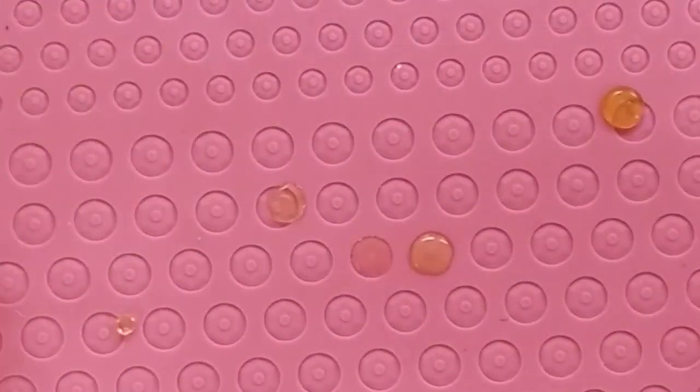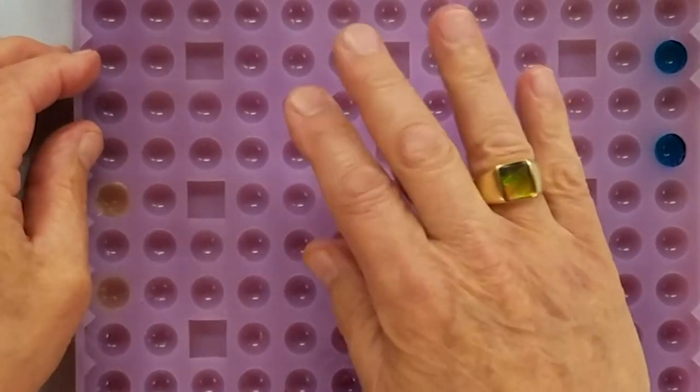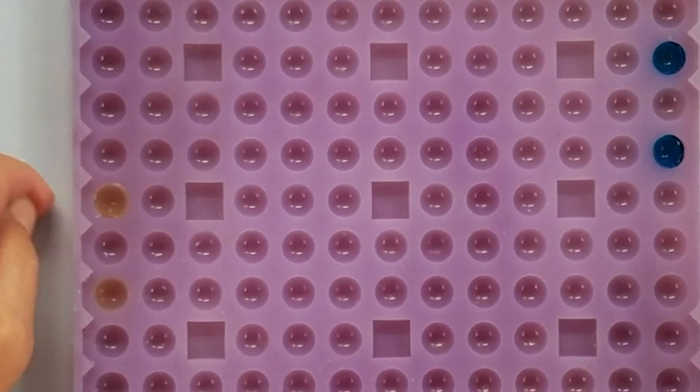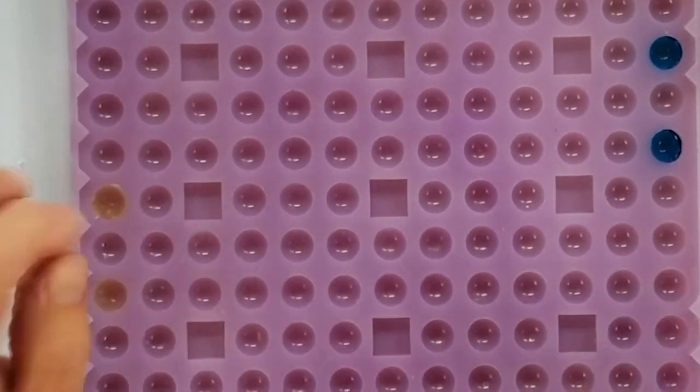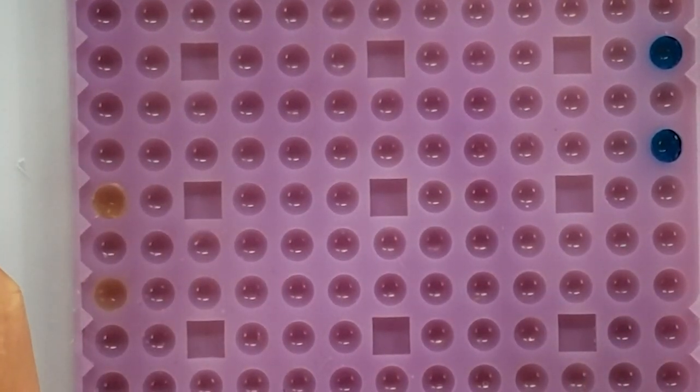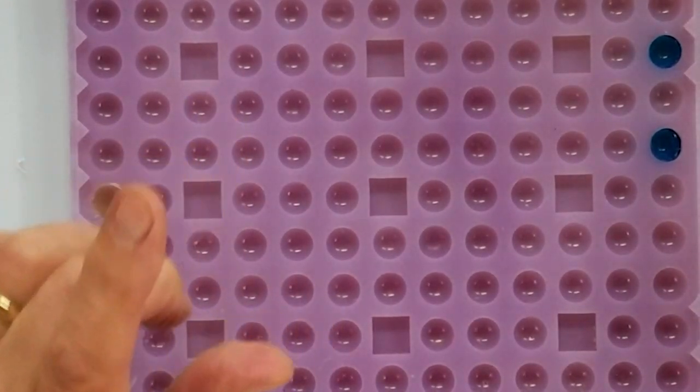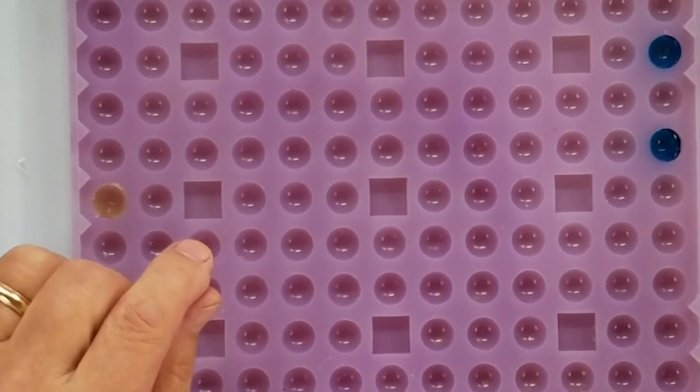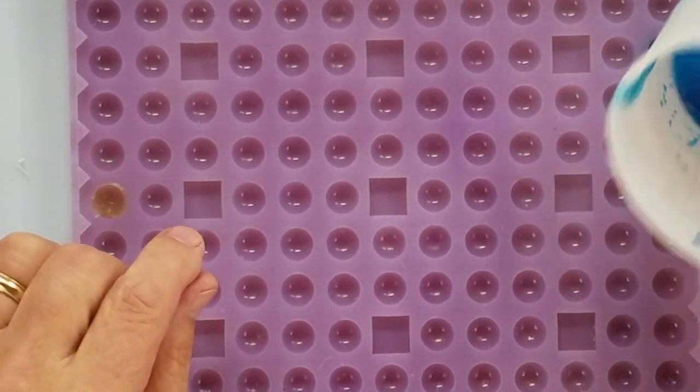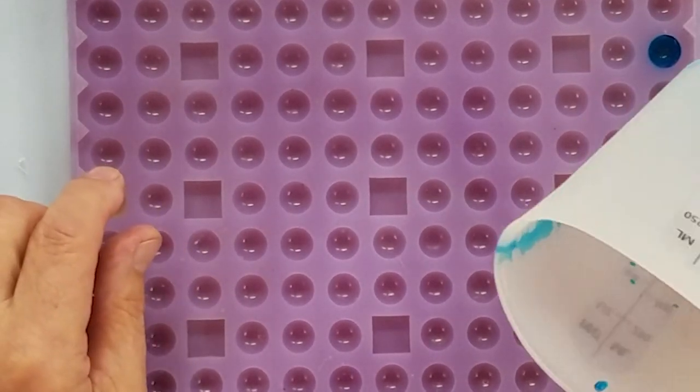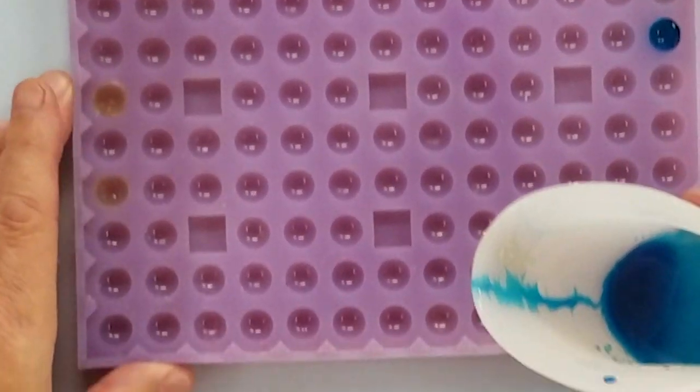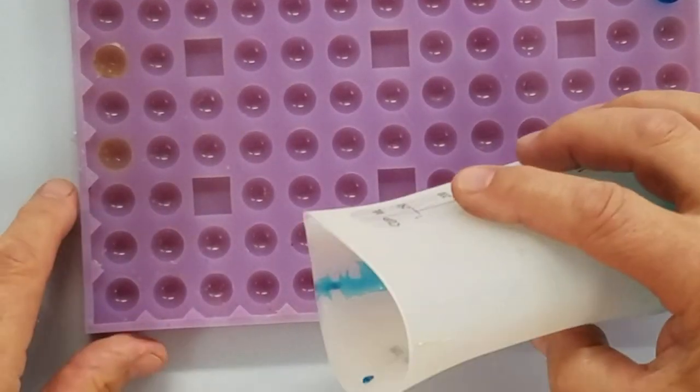The second option would be to use a mat with bigger half spheres, like this one we got from Chicago mold making. Then you can use either clear product like we did previously, or color the flexi for a colored effect. So I'm going to do the colored effect first. I'll do it along this edge because I've got some examples for you already done.